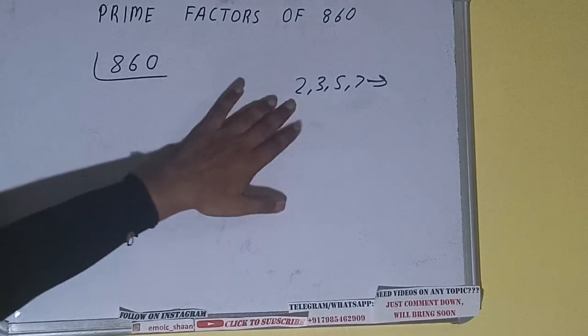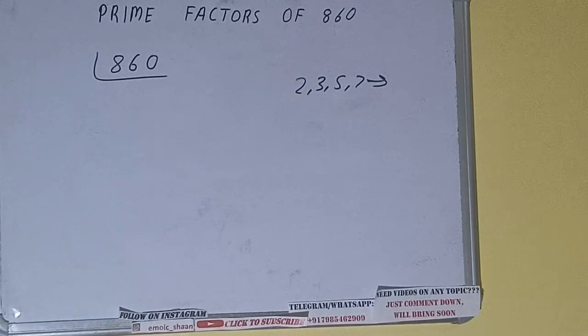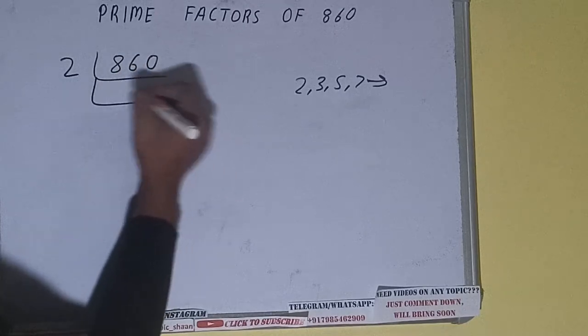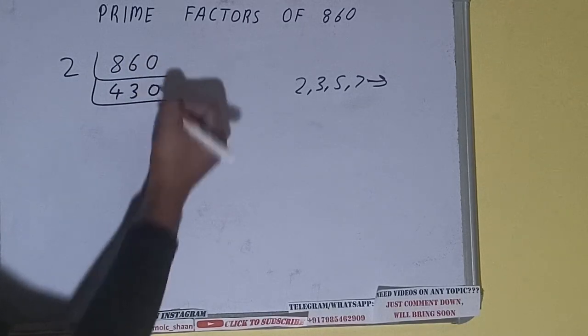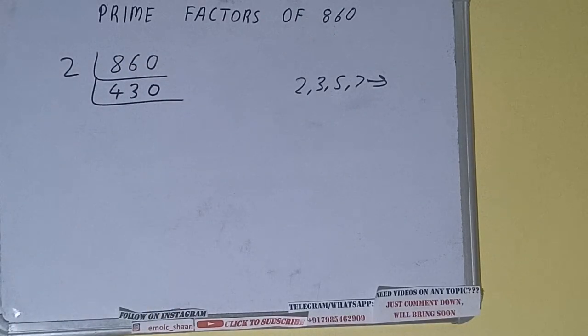...2. Is the number 860 divisible by 2? Yes it is, because the number is even. So divide it and we'll have 430. Now is 430 further divisible by 2? Yes it is, because it's also even, and we'll have 215.